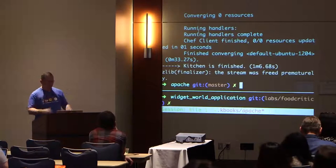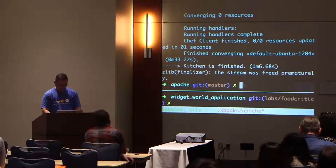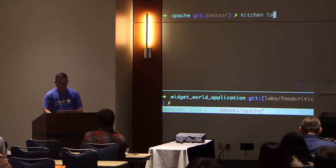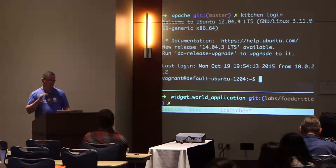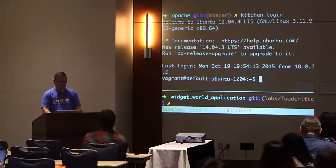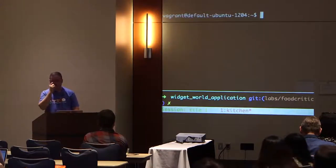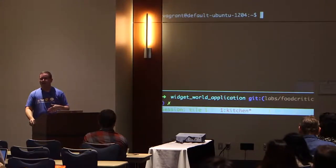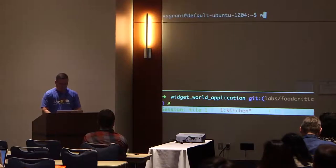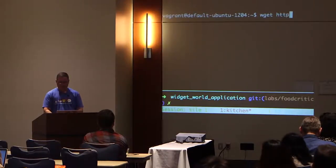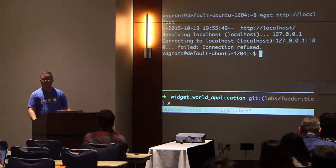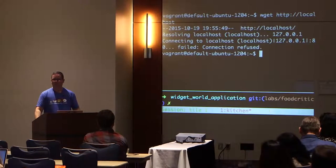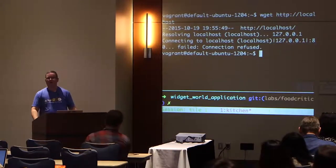It has finished converging. It took one minute and six seconds to create a virtual machine, spin it up, put my Chef code onto it, and execute the Chef client. So now I have this test kitchen I could log into. Our cookbook is called Apache — so you'd expect it might install Apache. I could do a 'wget http://localhost' and check. The connection is refused — it certainly isn't running. So we should write some tests to make sure we don't have to log in and bang on the box.